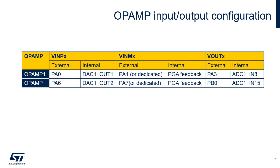The output is either connected to a GPIO pad or to an ADC input. By connecting the op-amp to its dedicated inputs, it can be used as a trans-impedance amplifier. A trans-impedance amplifier is a current-to-voltage converter.